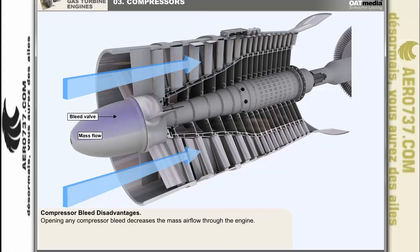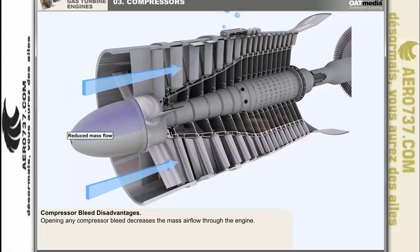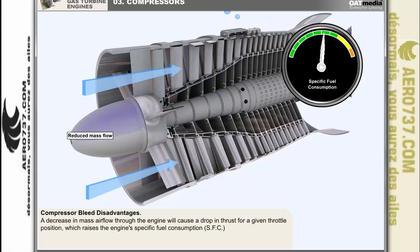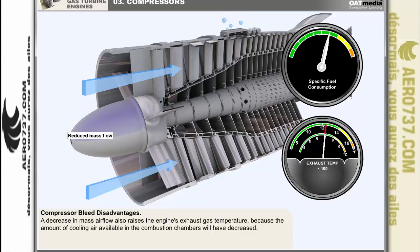However, there are disadvantages to the use of the bleed system. Opening any compressor bleed — whether used as a stall preventative measure or to supply air for aircraft services — decreases the mass airflow through the engine. A decrease in mass airflow causes a drop in thrust for a given throttle position, raising the engine's specific fuel consumption (SFC). A decrease in mass airflow also raises the exhaust gas temperature because the amount of cooling air available in the combustion chambers will have decreased.